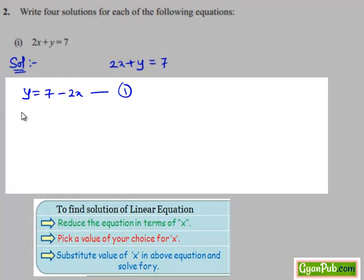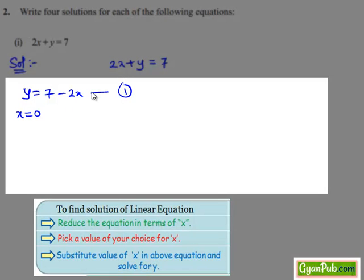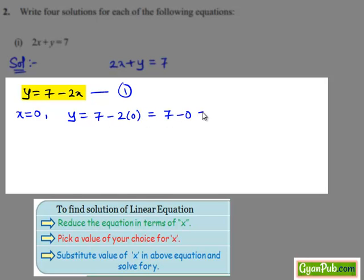Now, let us put x equals to 0 in equation number 1. We get y equals to 7 minus 2 times 0, that equals to 7 minus 0, which equals to 7. Hence, the ordered pair (0, 7) is the solution of equation number 1.